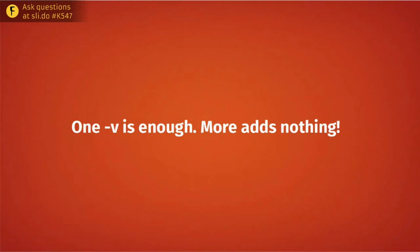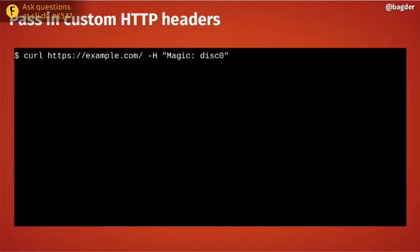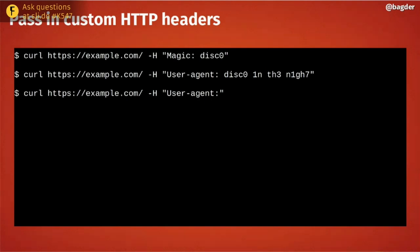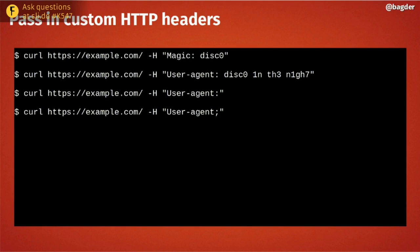You can add custom HTTP headers with the dash-H option. Maybe you want to send a custom header or set a special user agent, since some servers will deny requests that identify as curl. You can set any header value, remove a header by leaving the right side of the colon empty, or send a blank field by using a semicolon. This lets you craft your request to look exactly like another client or browser.